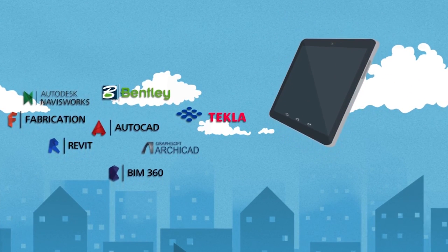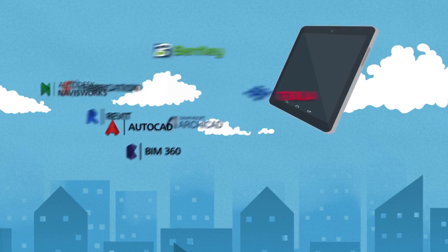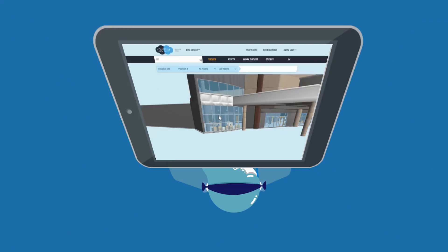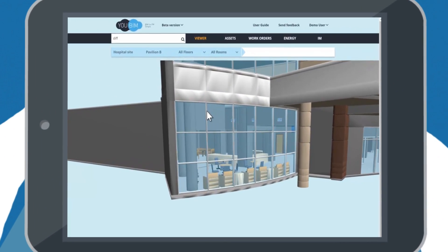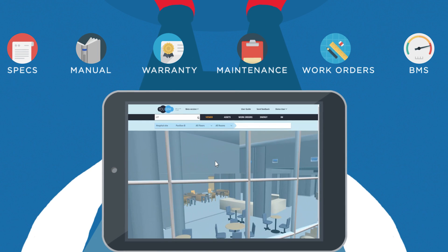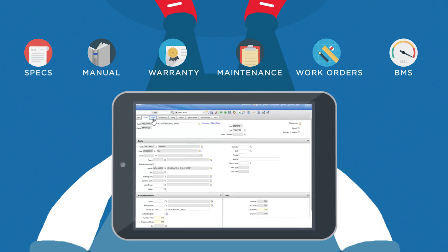UBIM integrates BIM models with asset specs, cut sheets, warranty information, submittals, etc. into one simple interface that can be accessed from any web browser or mobile device from anywhere.